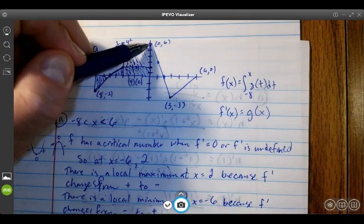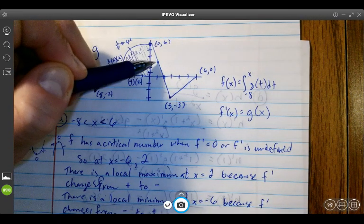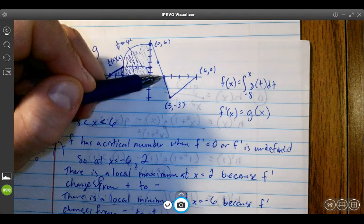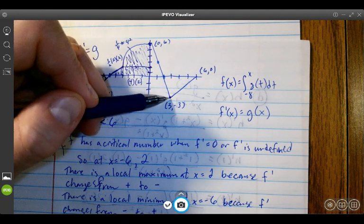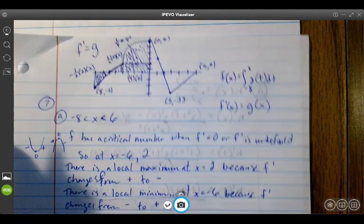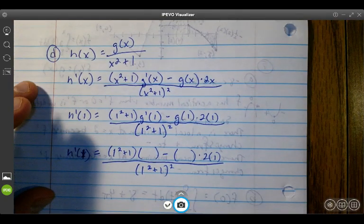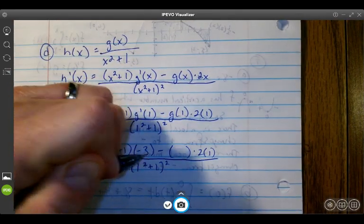Because you're here, you go down 1, 2, 3, over 1, down 1, 2, 3, over 1, down 1, 2, 3, over 1. So the slope is negative 3, and so g'(1) = -3.